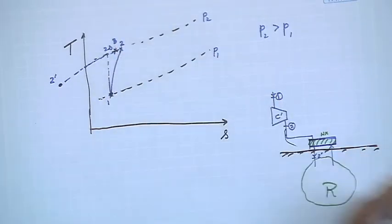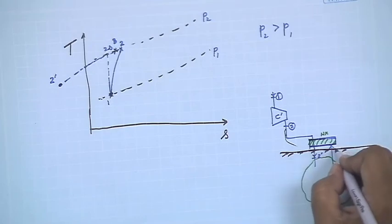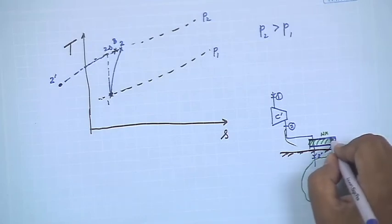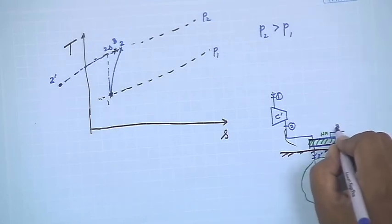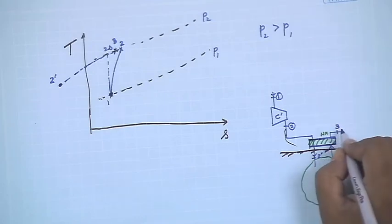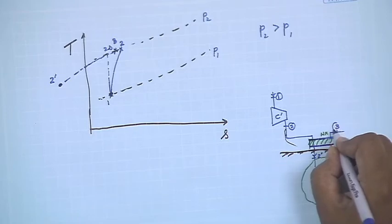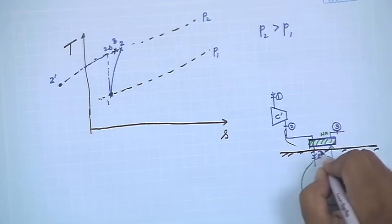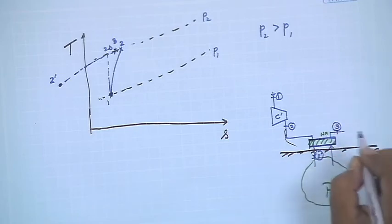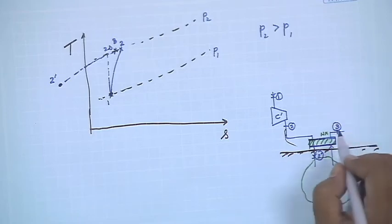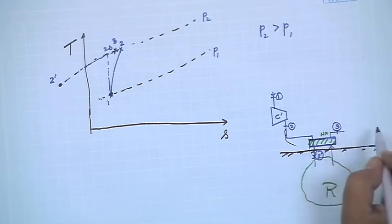After cooling to point 2-prime, the heat from the regenerative heat exchanger brings the compressed air back up in temperature. This heated state is point 3, from which the air is then fed to the turbine.